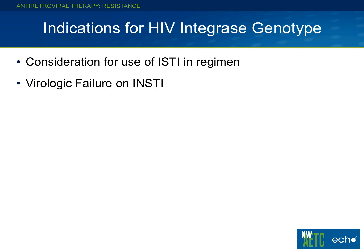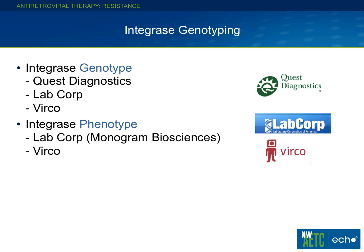The common indication for integrase genotyping is an individual who is on raltegravir or another integrase strand transfer inhibitor and is failing that regimen — that's when you really want to get an integrase genotype. That information is like gold, because we're going to have second and probably third generation integrase inhibitors, and knowing these original mutations will be very useful for your patient down the road. For integrase specifically, I recommend the genotype over phenotype: you want to know the specific mutations, not just a yes/no answer, so you can guide selection of future integrase inhibitors.